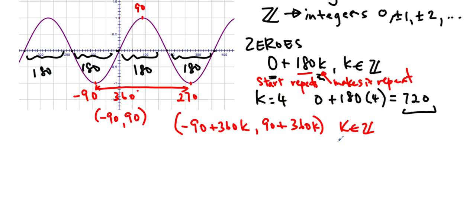So we get the interval of increase, negative 90 plus 360k, to 90 plus 360k, k in Z. I would encourage you to pause the video right now, and figure out what the interval of decrease is.